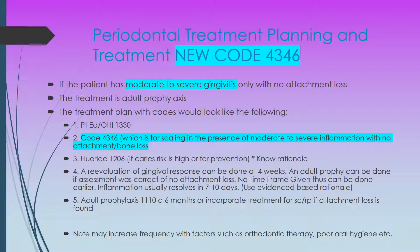Ideally we would go to an adult prophylaxis. However, sometimes when inflammation is resolved we may realize we have attachment loss, meaning we do have to do some scaling and root planing. Ideally in this case we're going to an adult prophylaxis every six months, or we incorporate treatment for scaling and root planing if attachment loss is found after the resolution of inflammation. The adult prophy frequency can also be altered based on orthodontic therapy or poor oral hygiene.